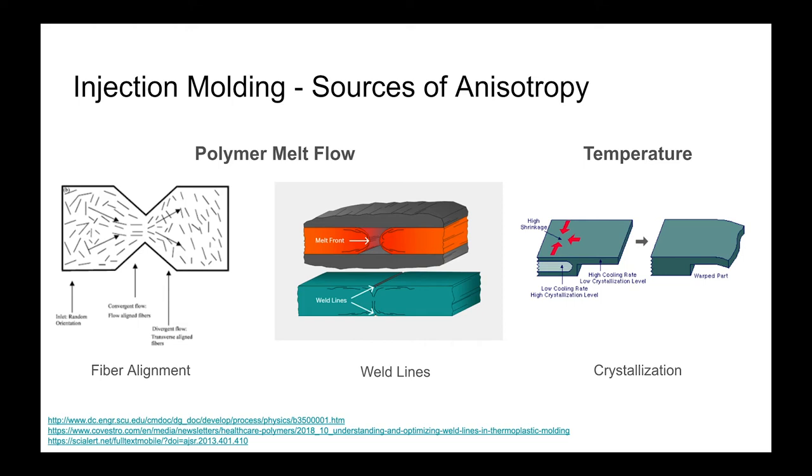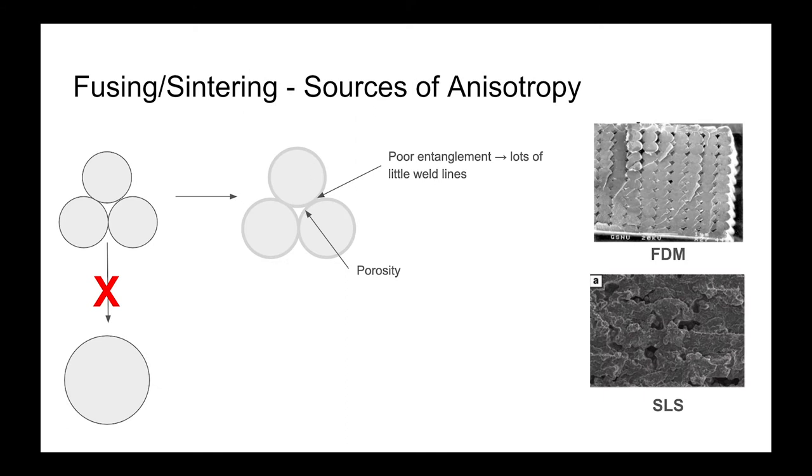Additive processes like FDM and SLS that rely on the fusing or sintering of bulk polymers can also give rise to parts that have non-uniformity or anisotropy. A major reason for this is as you're looking to melt and fuse or sinter these polymeric particles together, you can end up with poor entanglement at these interfaces. This can effectively act like lots of little weld lines that you've built into the part and can also give rise to porosity as well.